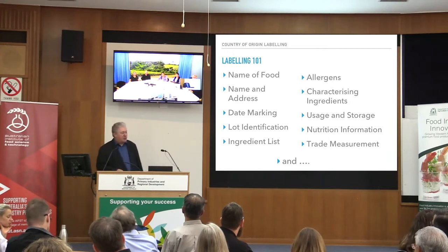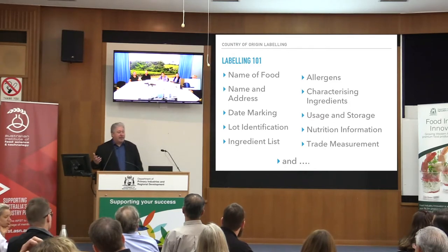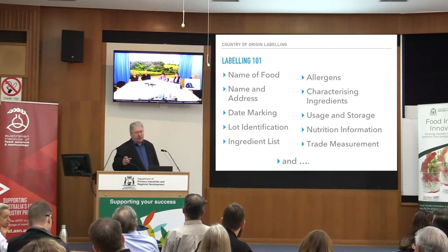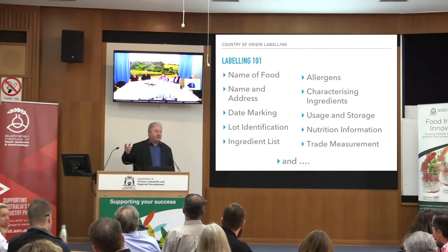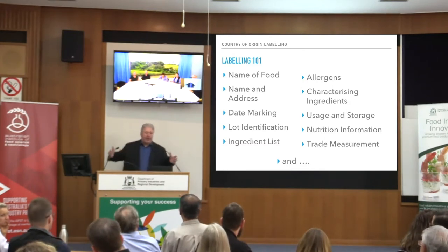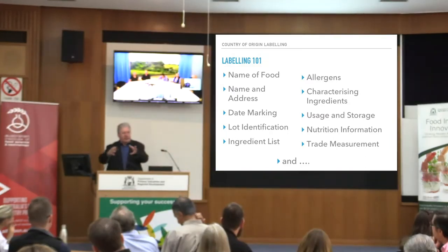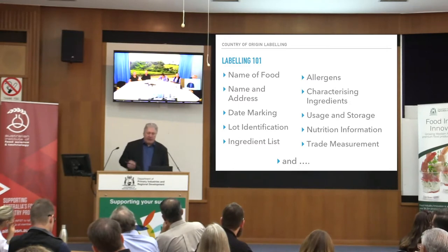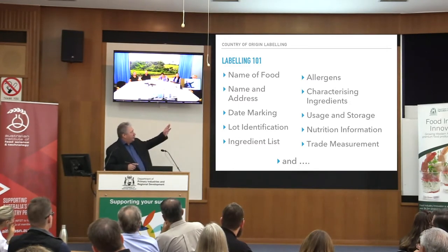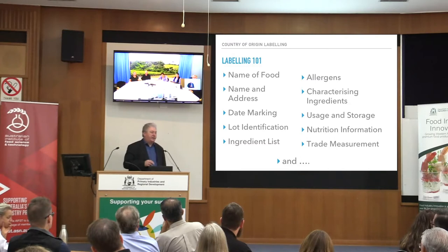Lot identification. Can your date mark be a lot ID? The answer is yes, provided it actually works as a lot ID. A lot is a production run — it's largely self-defined. Generally you have a consistent set of ingredients going into one process and the outcome is a batch. If you produce one batch a day and your date marking is specific to the day, then your date mark can be a lot ID. But don't think a date mark is always a lot ID — they are separate concepts. You must have a lot identification if you produce more than one lot in one day.